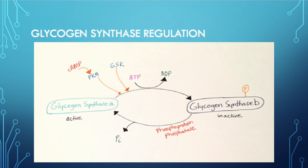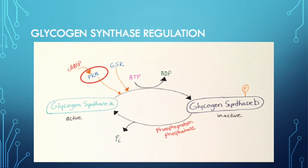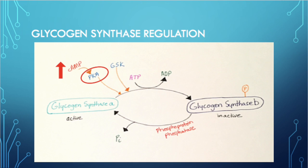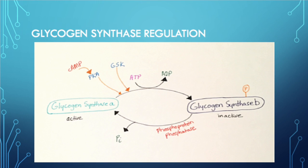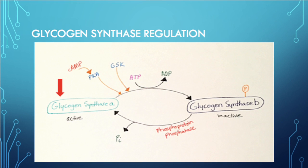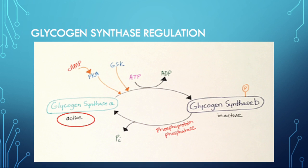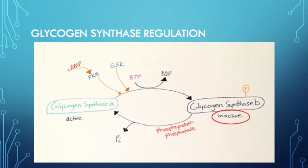Glycogen synthase is regulated by two different protein kinases: protein kinase A (PKA) and glycogen synthase kinase (GSK). Protein kinase A is activated by an increase in cyclic AMP. Glycogen synthase can be found in two forms: glycogen synthase A, the fully active form in which glycogen chains are growing, and glycogen synthase B, the inactive phosphorylated form in which glycogen synthesis is stopped. Glycogen synthase A can be transformed into glycogen synthase B when phosphorylated by PKA or GSK along with ATP.